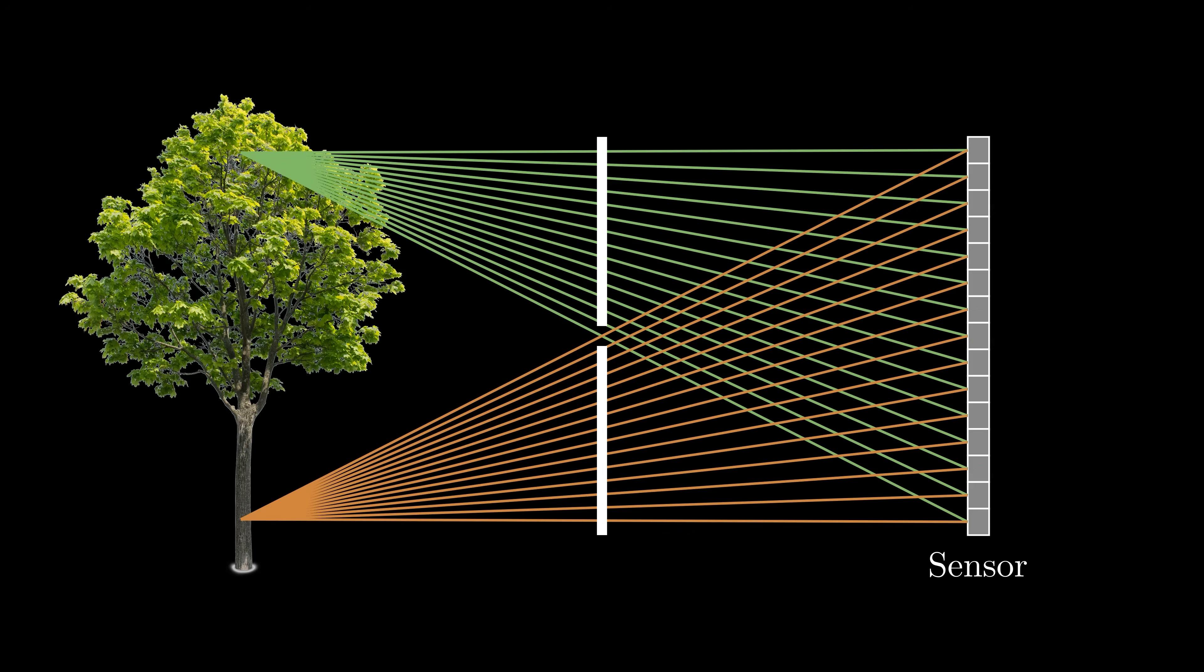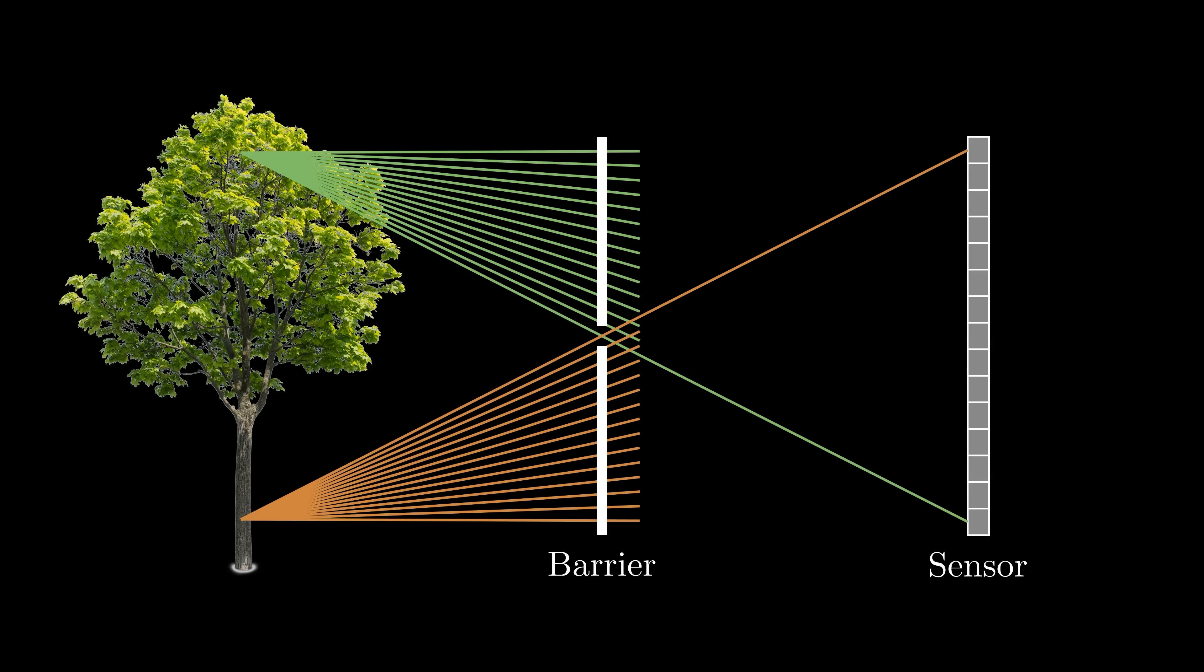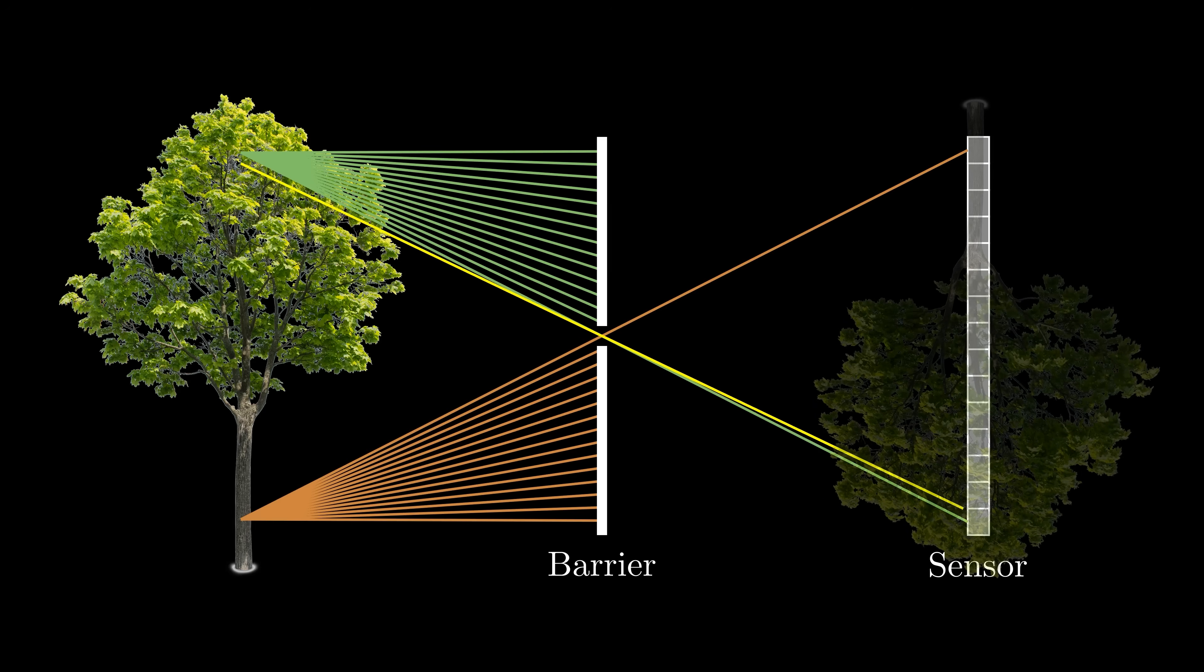One simple trick to fix this is by placing a barrier with a small hole in front of the sensor. The barrier blocks most of the light rays, allowing only those passing through the center to reach the sensor. This setup is known as a pinhole, or more generally an aperture. With this setup, each pixel on the sensor collects light from exactly one specific point in the scene. Therefore, we can capture a sharp image.